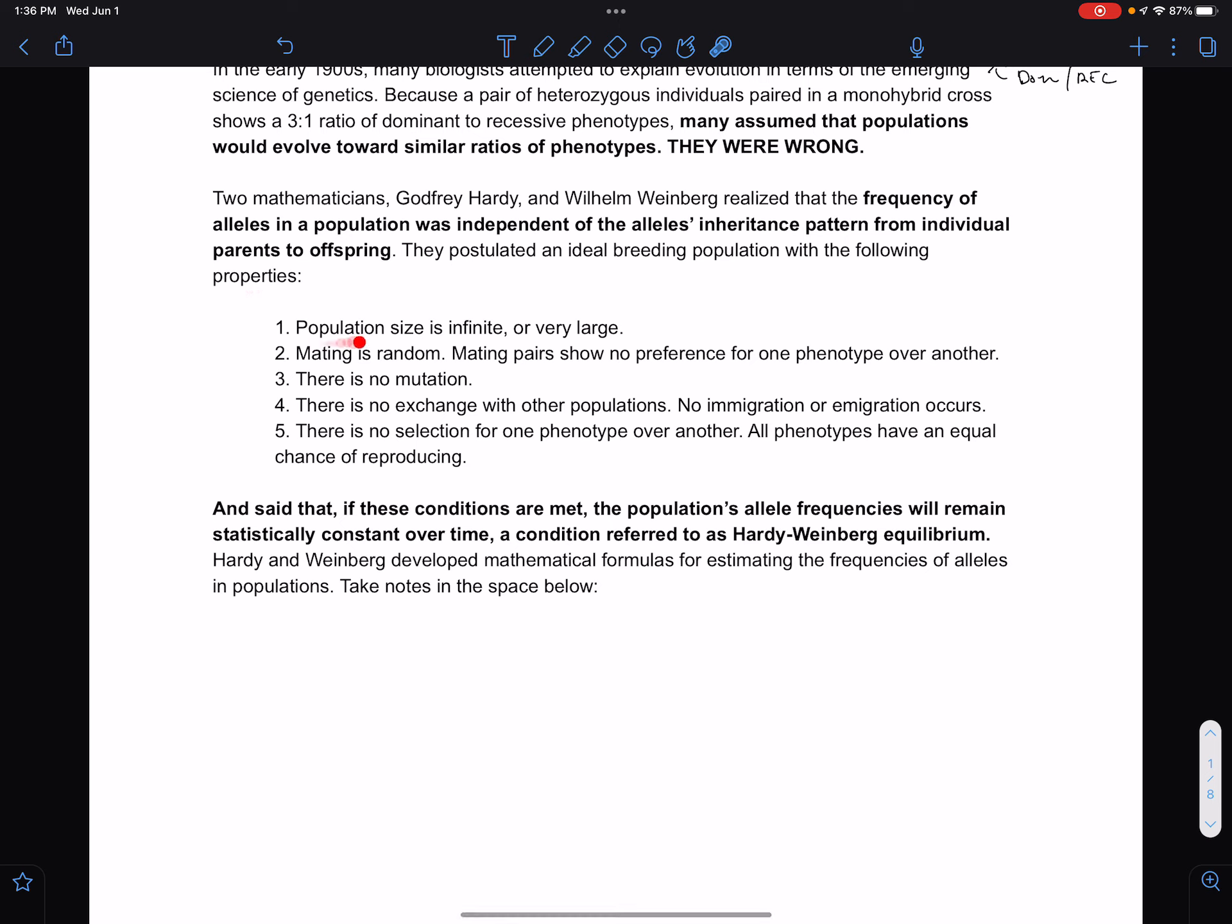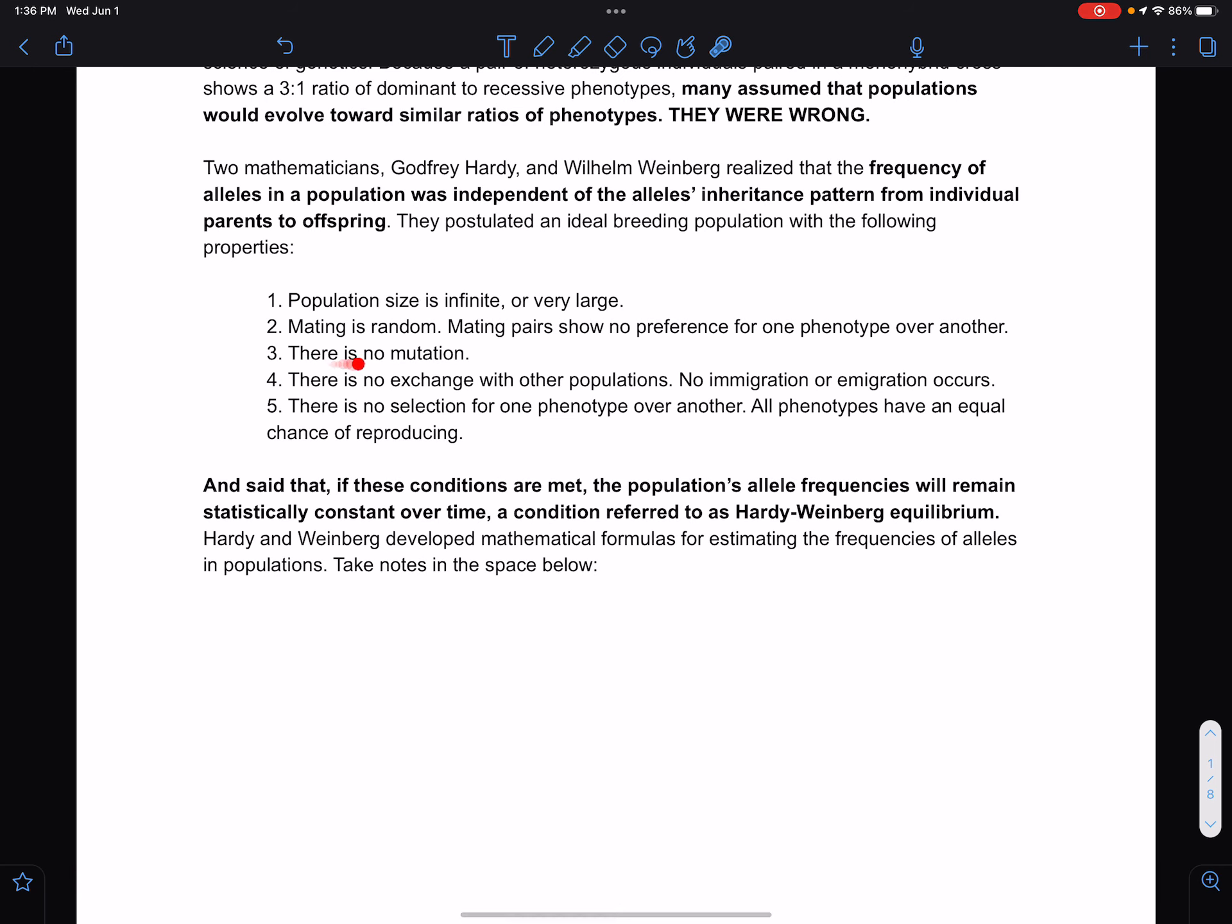They had an idea that in an ideal breeding population with the following properties: population size was infinite or very large, mating was random and mating pairs showed no preference for one phenotype over the other, there was no mutation, no exchange with other populations, no immigration or emigration, and there was no selection.